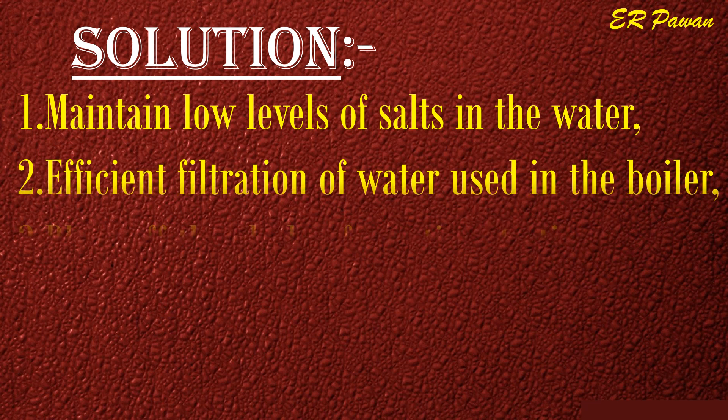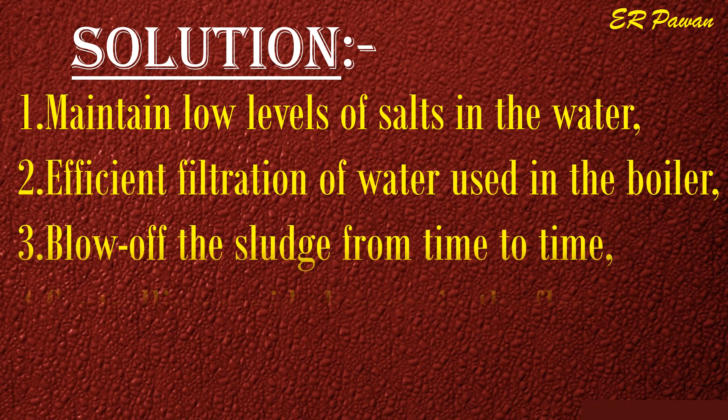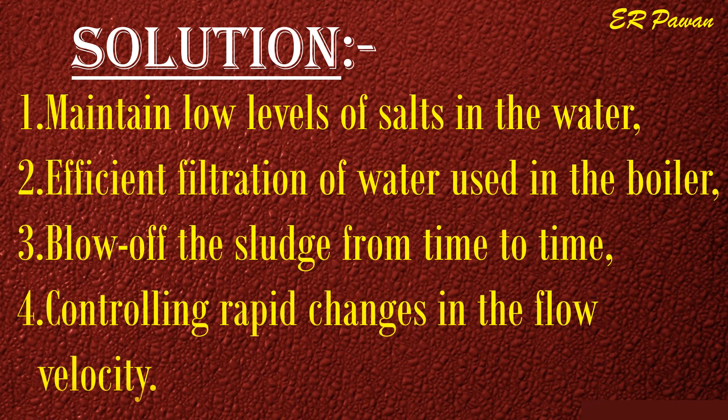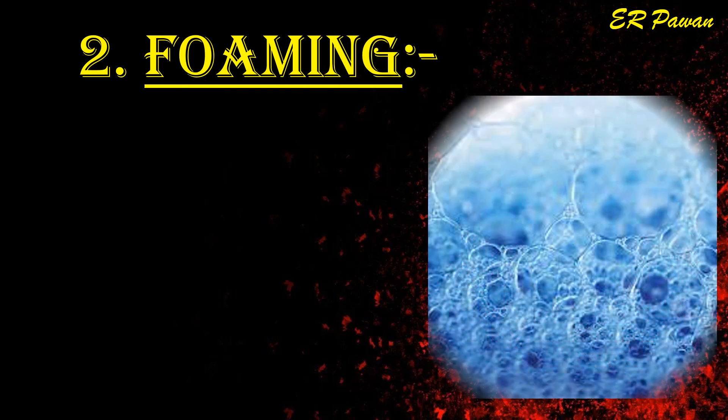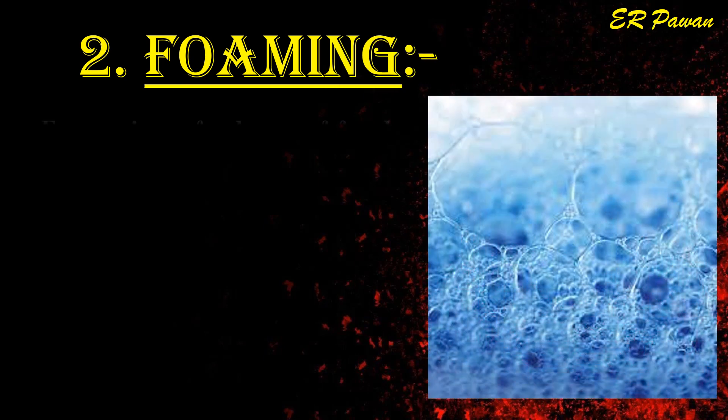Solutions for priming: one, maintain low levels of salts in the water; two, efficient filtration of water used in the boiler; three, blow off the sludge from time to time; four, control rapid changes in flow velocity.